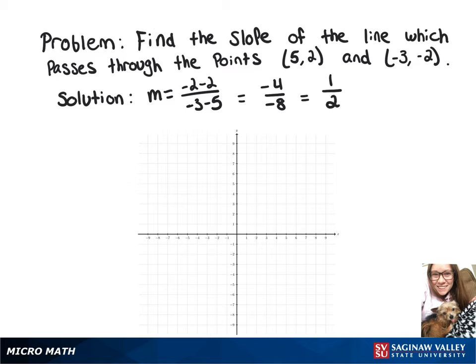So going to our graph, we'll plot (5, 2) and (-3, -2), and then from that point we'll go up 1/2, again up 1/2, and up 1/2 again, and then a line going through our points.